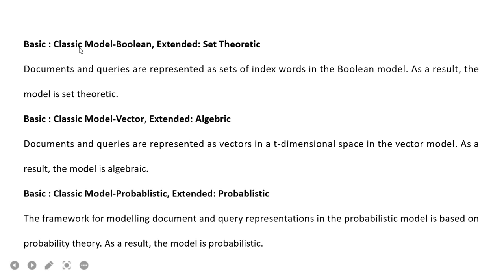The classic Boolean model and its extended form is set theoretic — documents and queries are represented as sets of index words, so the model is set theoretic. The classic vector model and its extended form is algebraic — documents and queries are represented as vectors in a T-dimensional space, so the model is algebraic. The basic probabilistic model's extended form is also probabilistic — the framework for modeling document and query representation is based on probability theory, so the model is probabilistic.